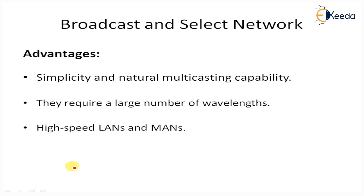These networks require a large number of wavelengths, typically at least as many as there are nodes in the network. Because there is no wavelength reuse, the network is not scalable beyond the number of supported wavelengths. The main application for broadcast and select networks is high-speed local area networks and metropolitan area networks.